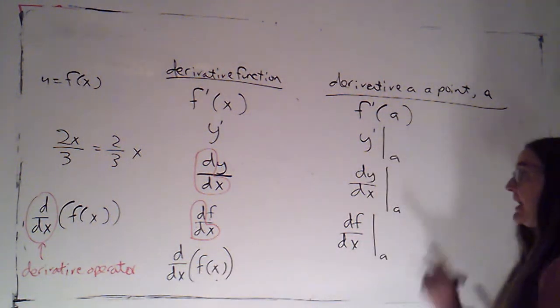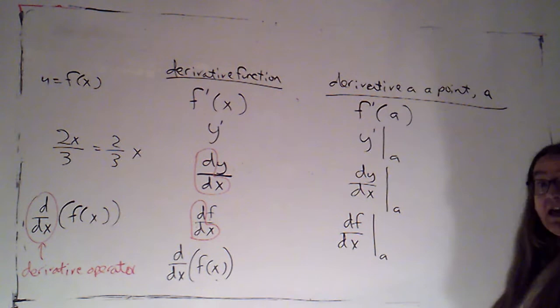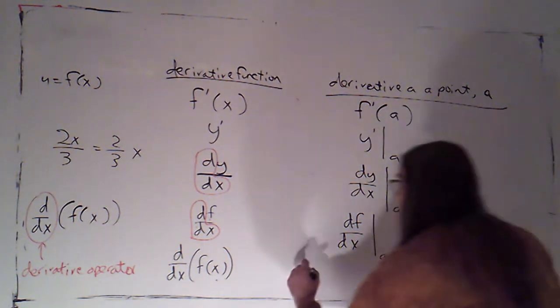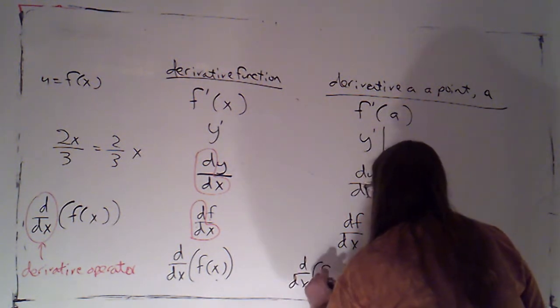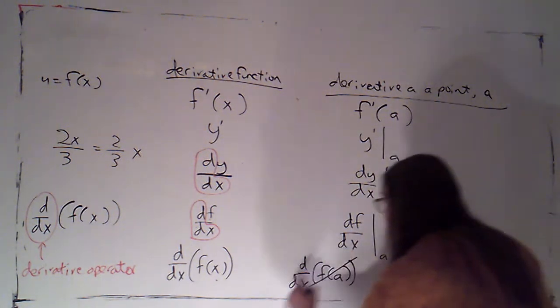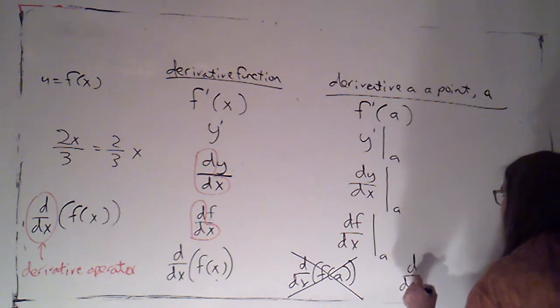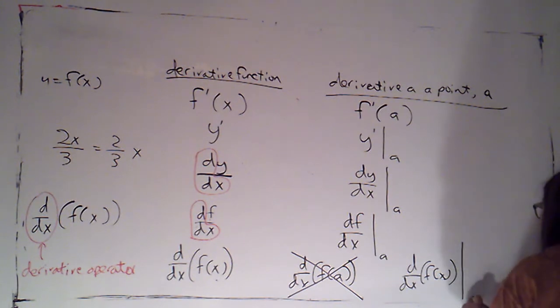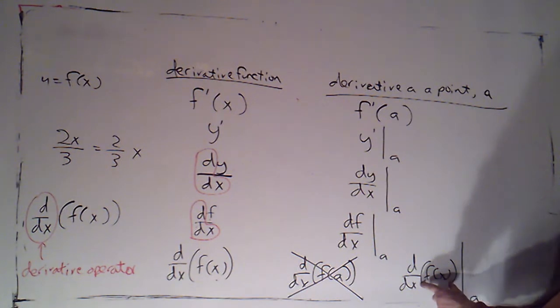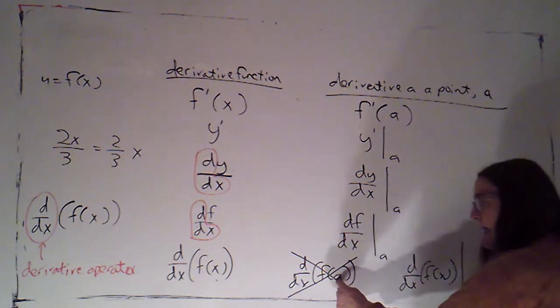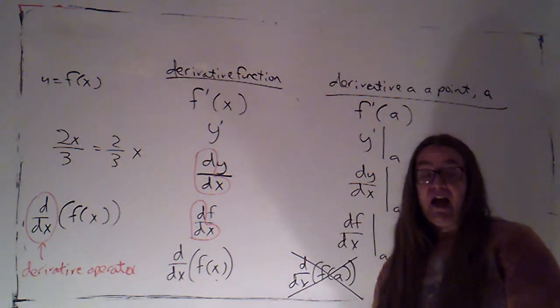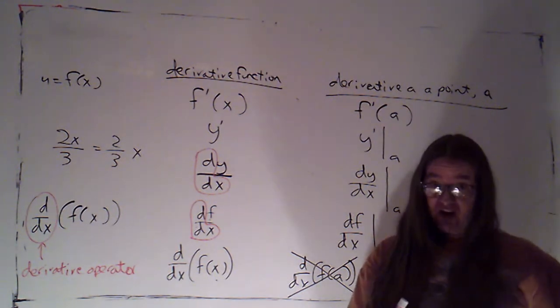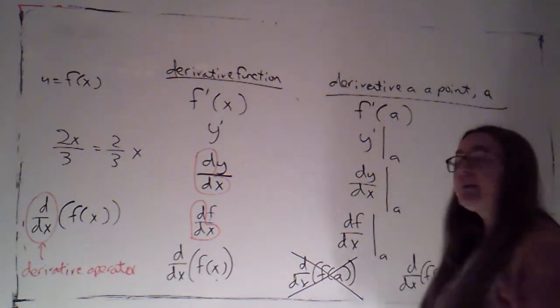So we've got this. Now, you might think that when I wanted to evaluate this at a point, I would just write d by dx of f of a. And that is actually wrong. I would have to write d by dx of f of x evaluated at a. That's because this is the thing I'm taking the derivative of. If I plug in the number a before I take the derivative,